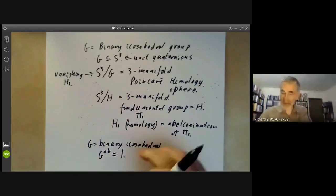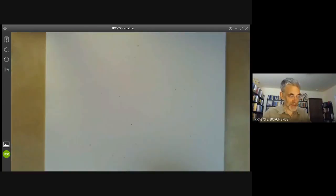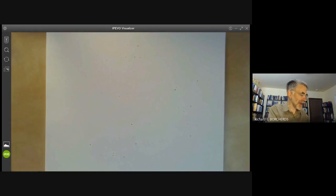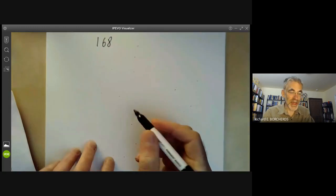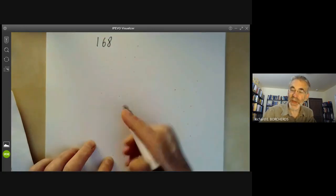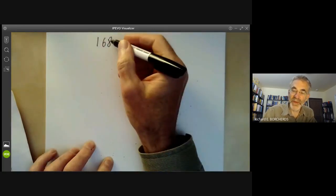So now we'll discuss the groups of order 168. So we've seen that the first simple group is order 60. The next simple group is order 168. And there are two obvious ways of writing down groups of order 168.